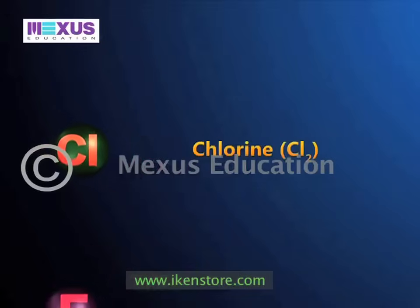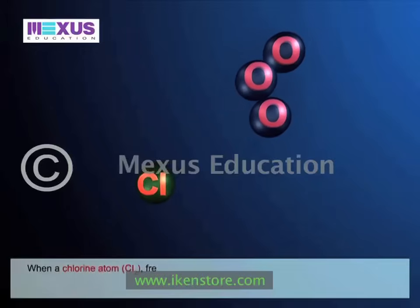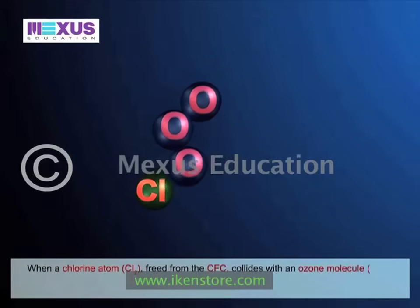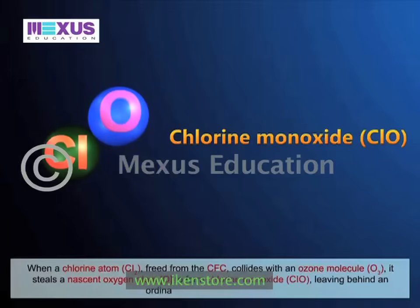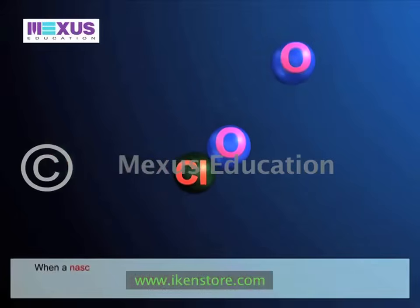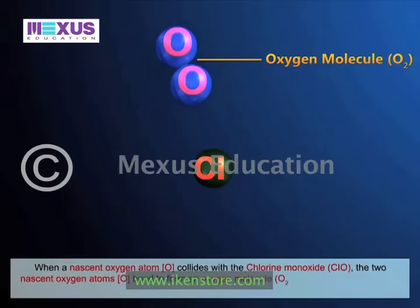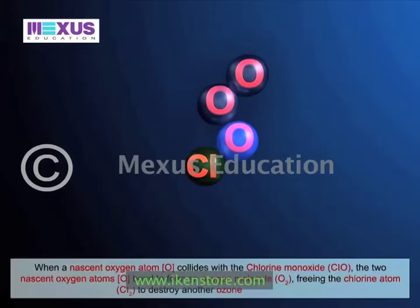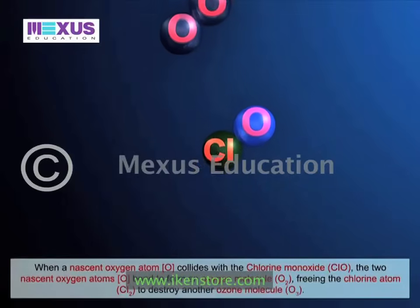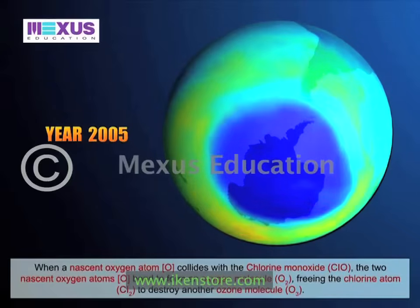The oxygen atoms freed from CFCs go ahead to destroy ozone. When a chlorine atom (Cl) collides with an ozone molecule (O3), it steals a nascent oxygen atom (O) to form chlorine monoxide (ClO), leaving behind an ordinary oxygen molecule. When an oxygen atom collides with chlorine monoxide (ClO), the two nascent oxygen atoms bond to form an oxygen molecule (O2). The chlorine atom is thus released and is free again to destroy another ozone molecule (O3). The cycle continues, leading to the depletion of the ozone layer, which has been suffering this damage for many years.